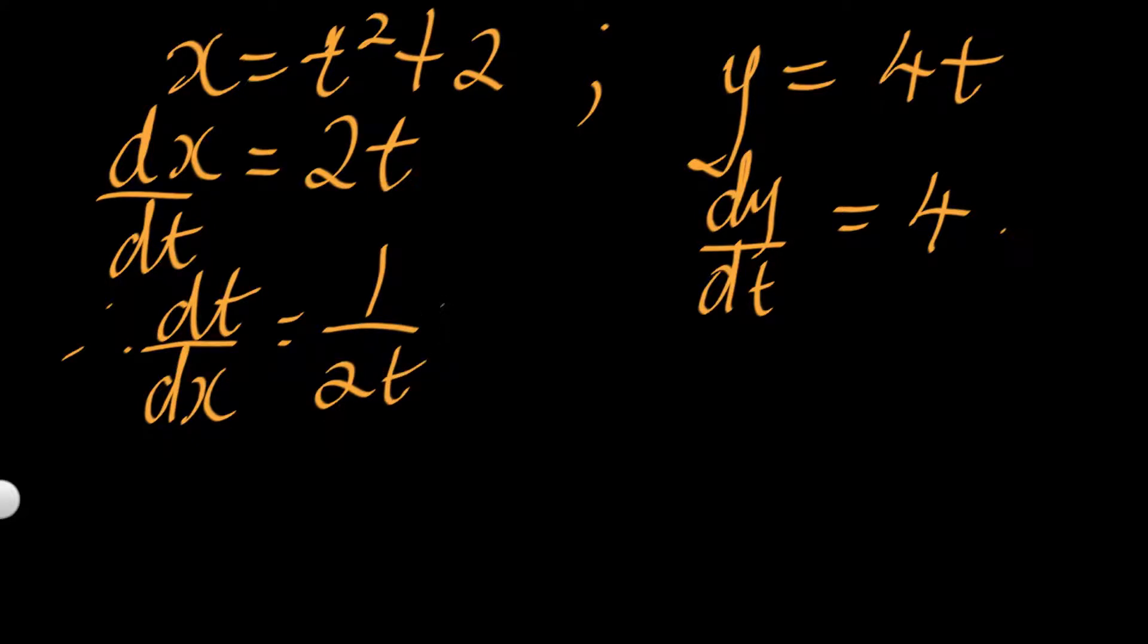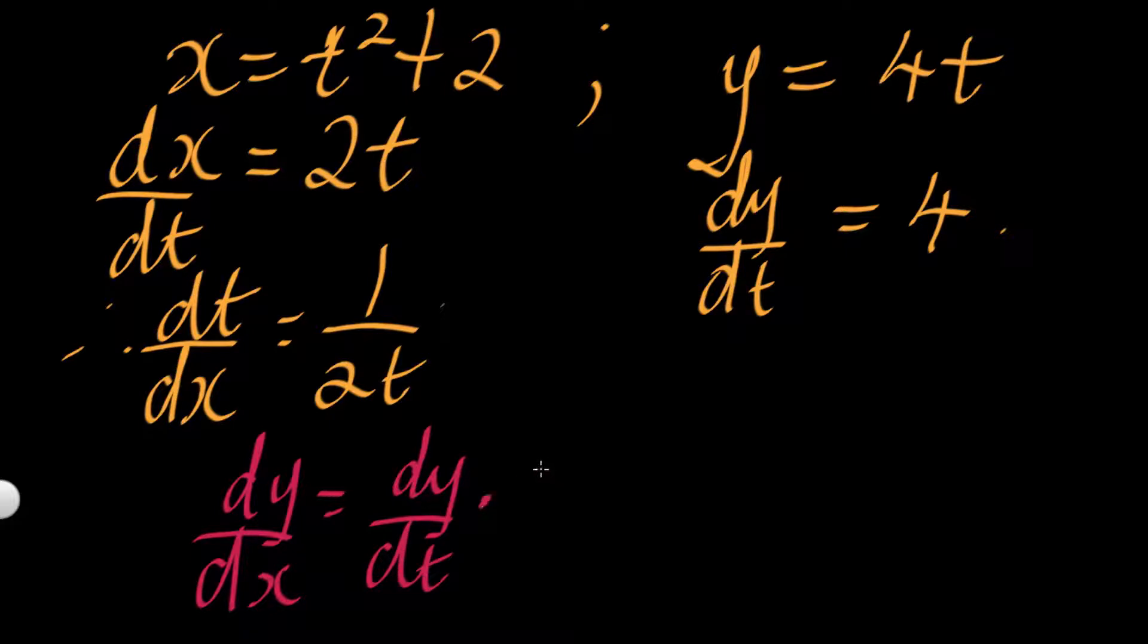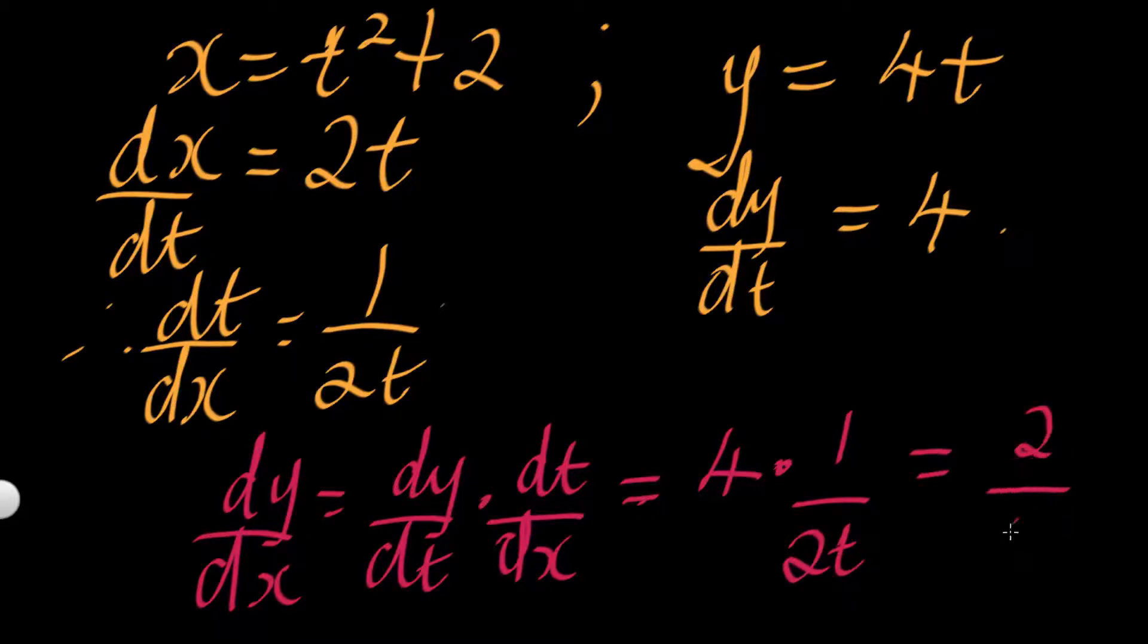Let's now move on to get our dy/dx. So dy/dx is equal to dy/dt times dt/dx, which is essentially dy/dt is 4, we are multiplying this 4 by 1 over 2t. So our final answer is 2 over t. That's dy/dx.